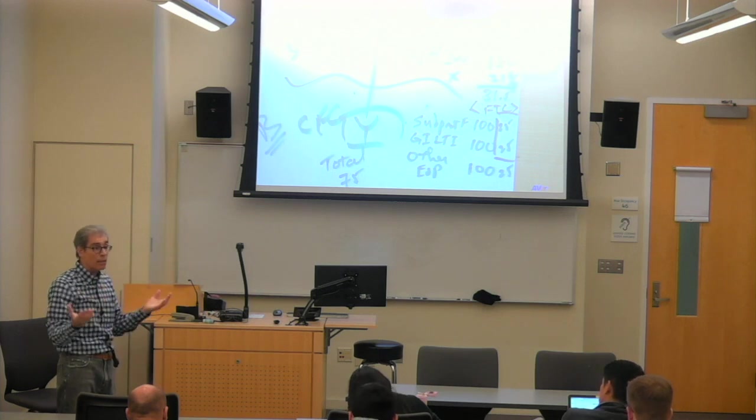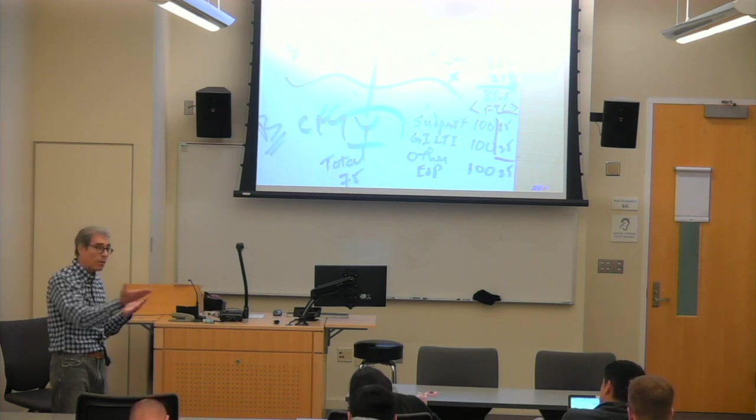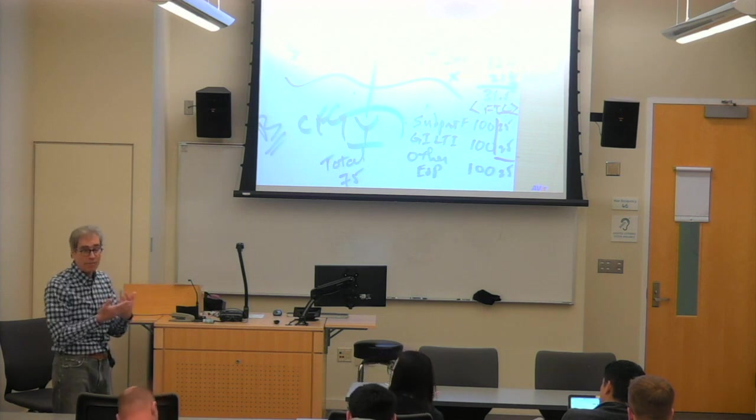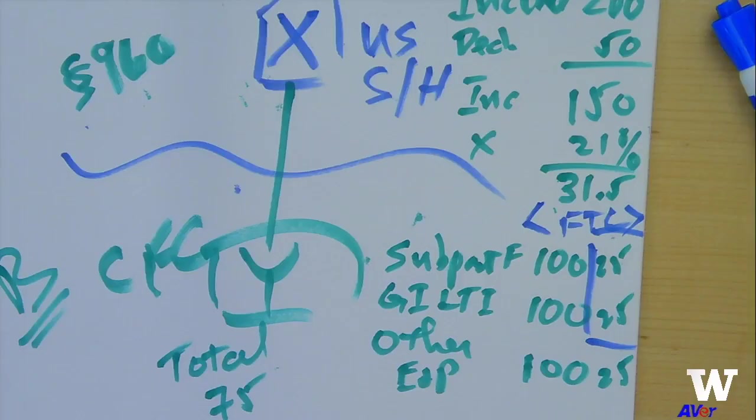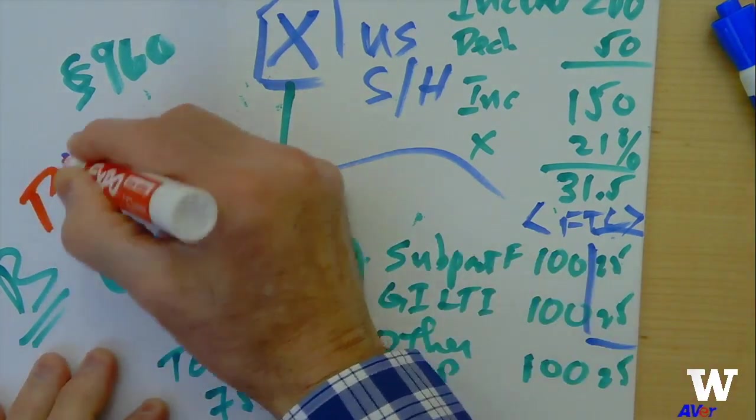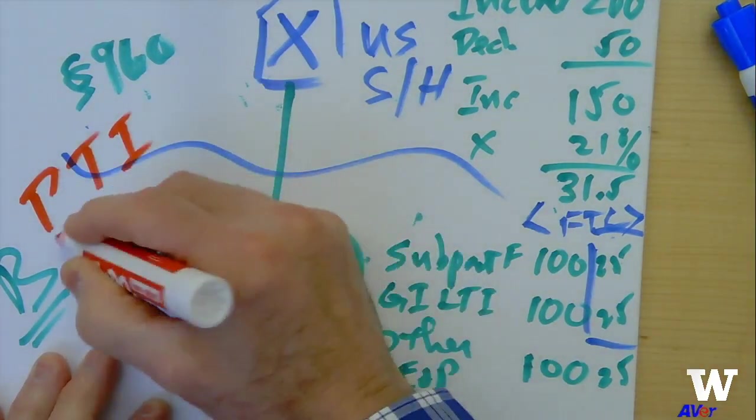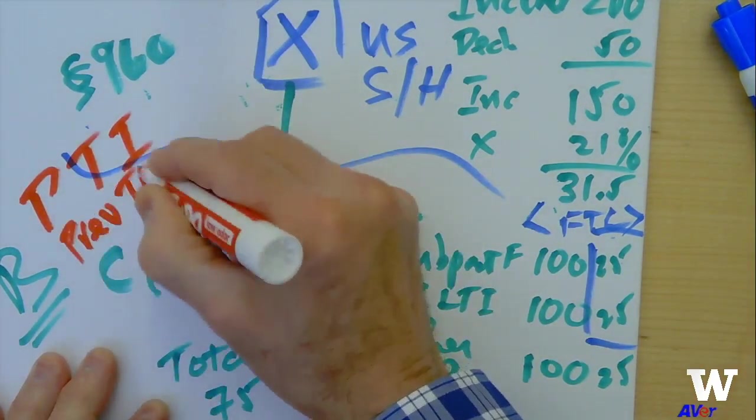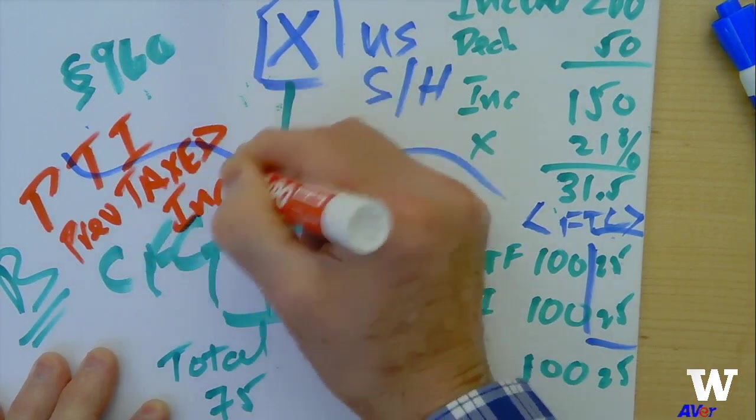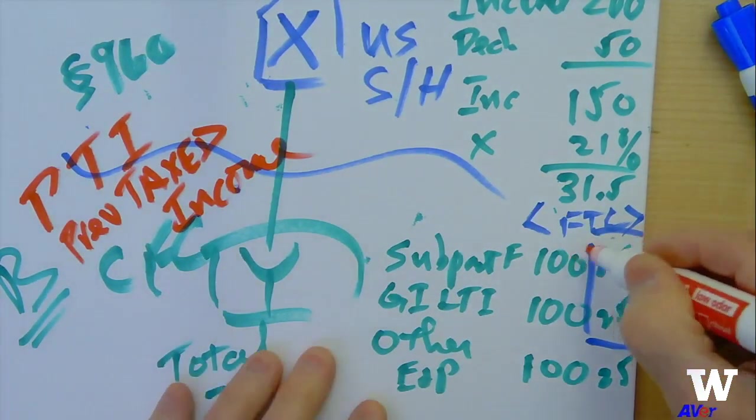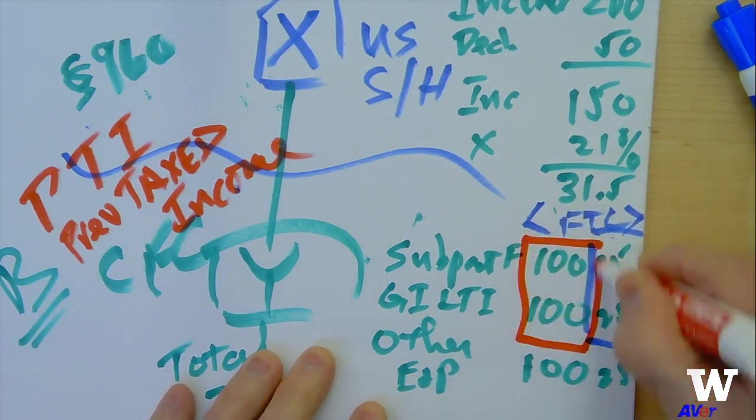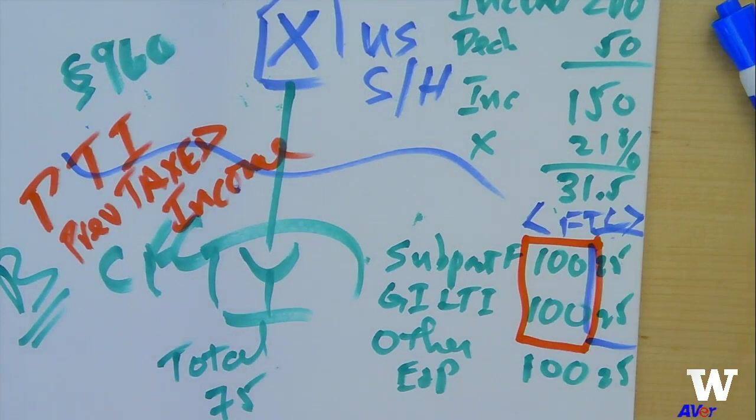And a foreign tax credit benefit makes some sense. So the rules contemplate this kind of stuff, and they give ordering rules and create accounts that allow you to track it. So there would be what's called generally a PTI account, previously taxed income account. And that account would be increased by that 100 and 100 that was recognized up at the X level.